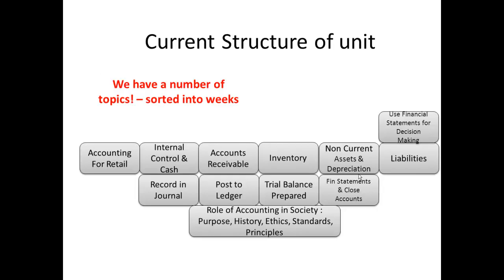Let's look at the current structure of the unit before we talk about where we may go. Currently we have 12 topics, and each topic is designed to be a week. We start off with a basic introduction like the role of accounting, then build up with the accounting cycle as we work through. Then we move up a level to look specifically at assets, various categories of assets, a short introduction to liabilities. And then not until we get to the end — which is the interesting bit about accounting — is how you use the information you produce to make decisions.